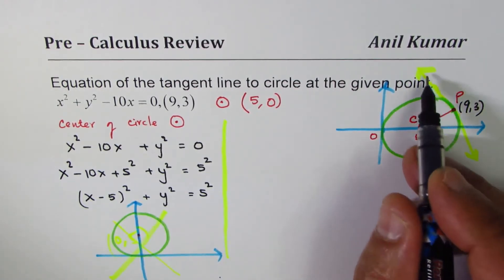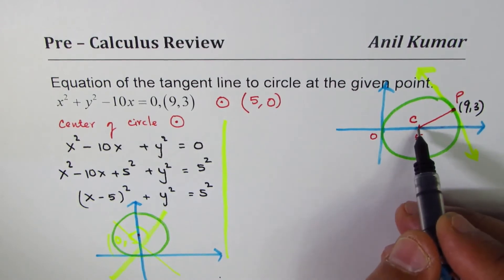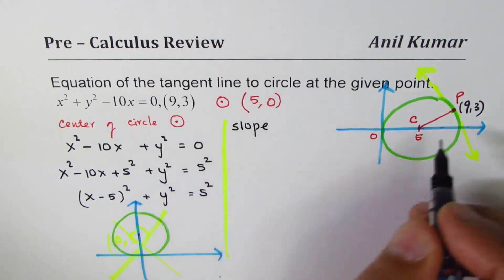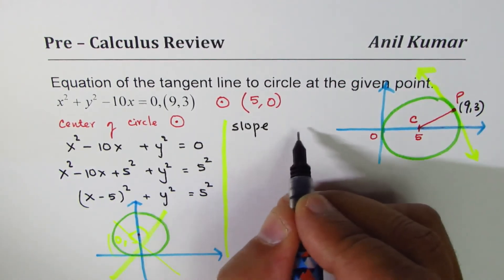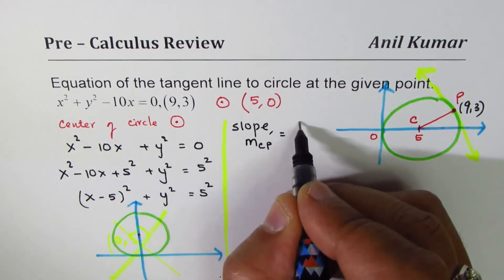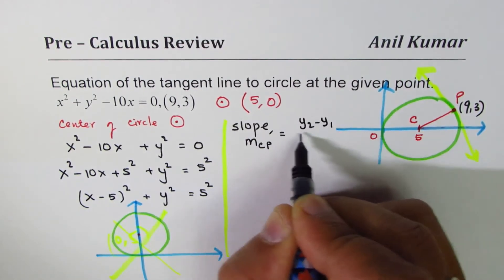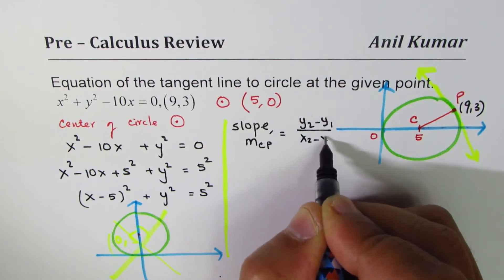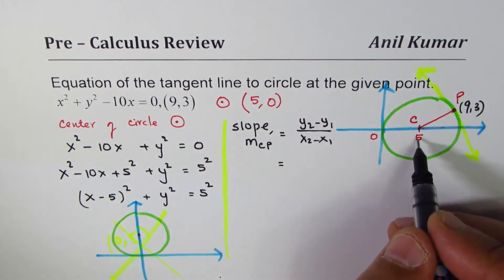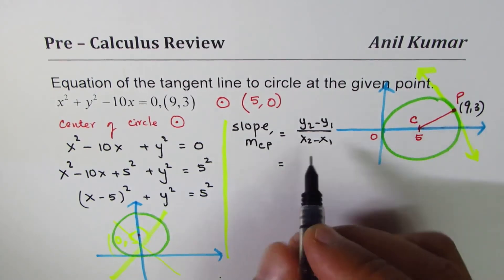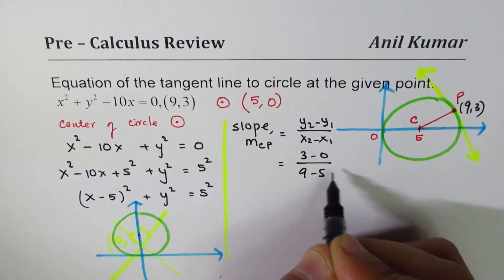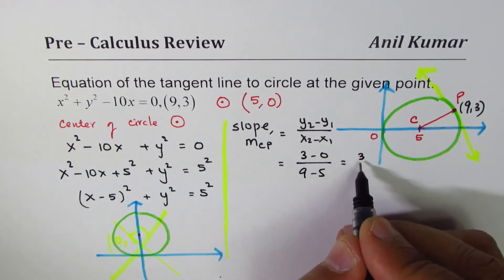To find slope of tangent line, we can find slope of CP. So slope CP could be written as m_CP. The formula is (y₂ - y₁)/(x₂ - x₁), which is 3, and this point is 5, 0. So (3 - 0)/(9 - 5), that gives you 3/4.